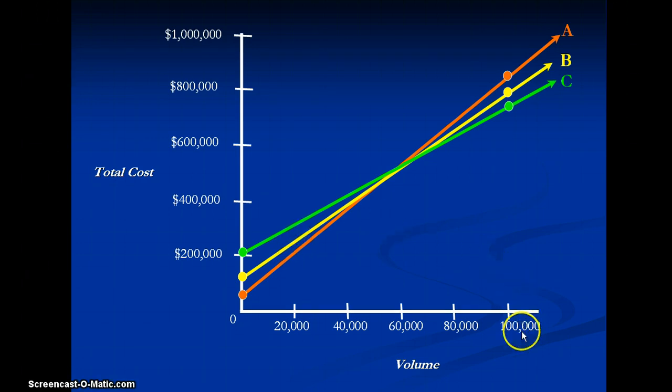All the way on the right side of the graph where our production volumes are very high, say 100,000, our order has switched. The lowest cost now is C due to its very small variable cost, and then B and then A is our most expensive.